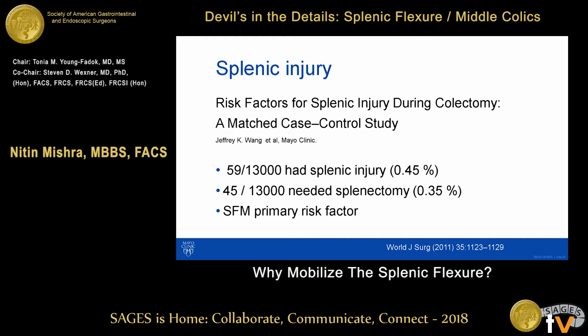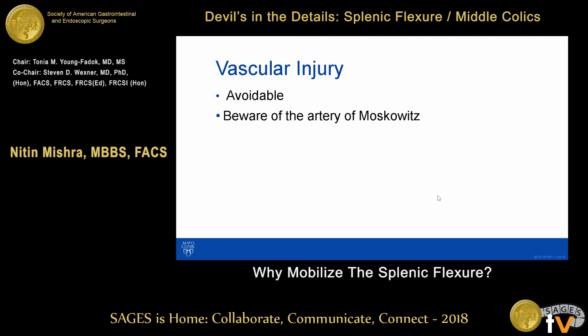Regarding splenic injury — data from Mayo Clinic shows 0.45% of patients who had colectomies had splenic injuries, and 0.35% needed a splenectomy. Yes, it is a real problem, and splenic flexure mobilization is the primary risk factor, but it is a smaller problem in the bigger picture. One NIS study shows that splenic injury has reduced with the use of laparoscopy — in open surgery it is much easier to injure the spleen. Severe vascular injury is avoidable with awareness of the artery of Moskowitz.